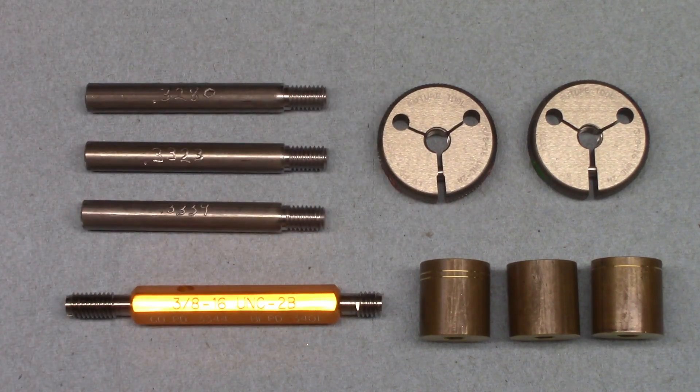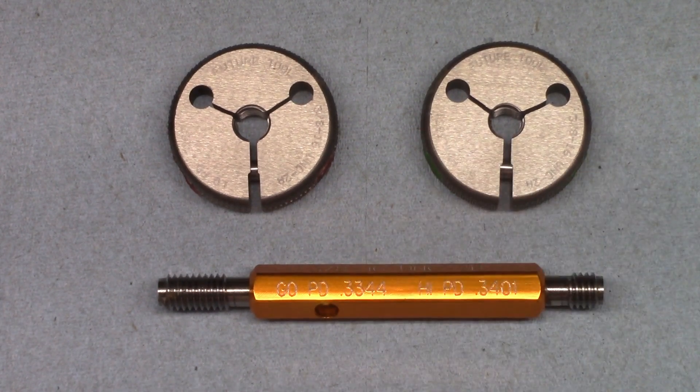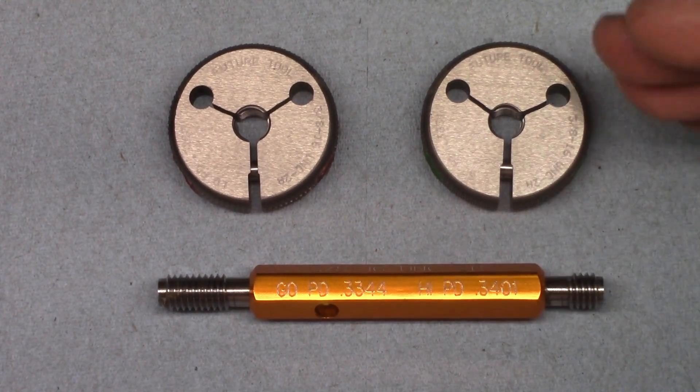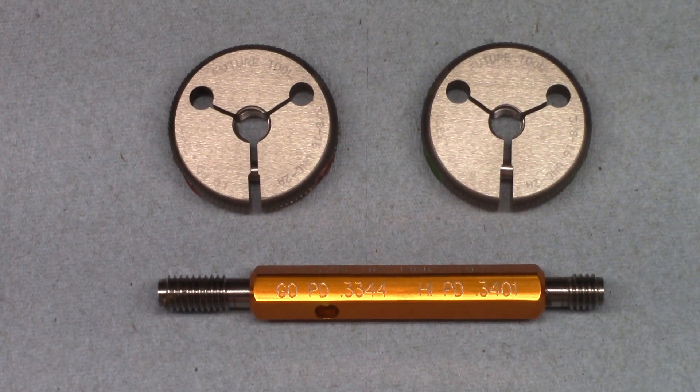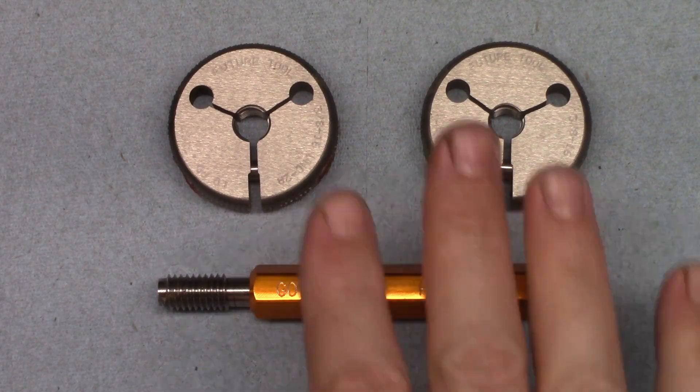Now let's get started. First of all, these do not measure the threads. They're what are known as go, no-go gauges and are made to the upper and lower limits of the pitch diameter for the thread, so what you're doing is comparing your threads to these known sizes.